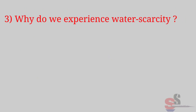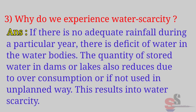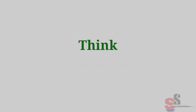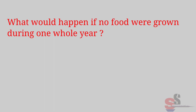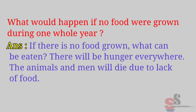Third: Why do we experience water scarcity? Answer: If there is no adequate rainfall during a particular year, there is a deficit of water in water bodies. The quantity of stored water in dams or lakes also reduces due to overconsumption or unplanned use, resulting in water scarcity. Think — Textbook page 64: What would happen if no food were grown during one whole year? Answer: There will be hunger everywhere and animals and men will die due to lack of food.